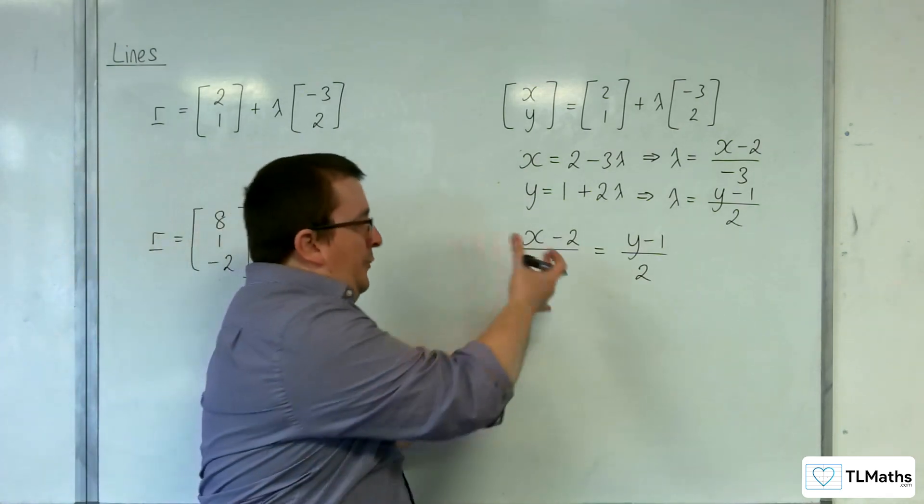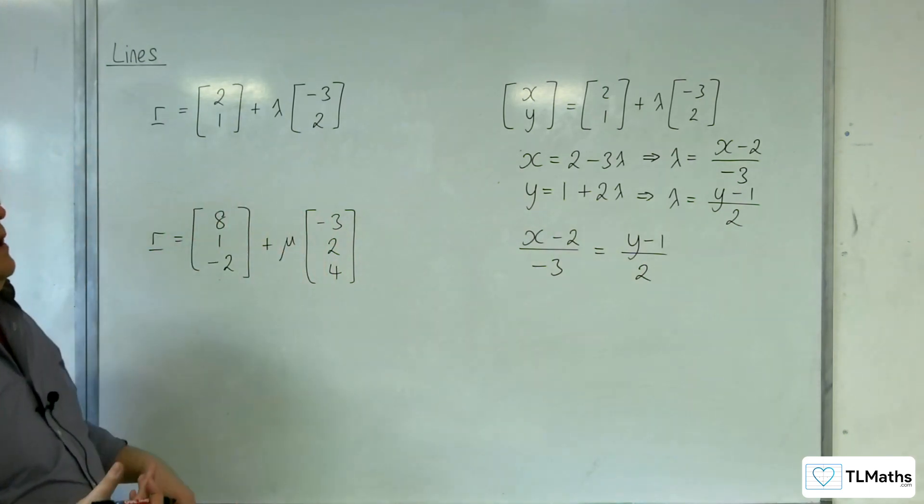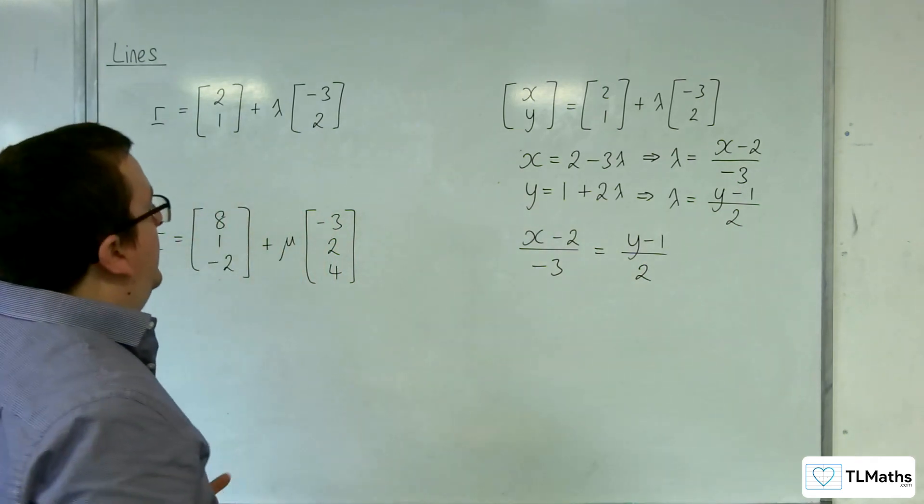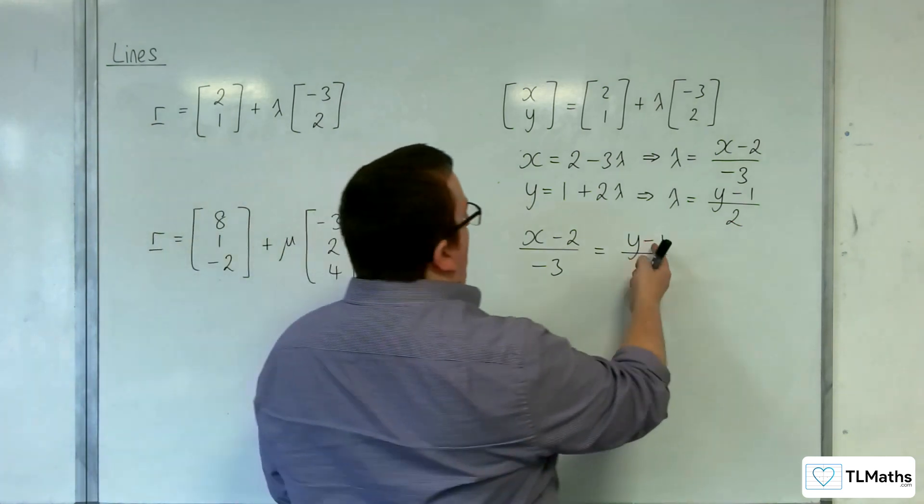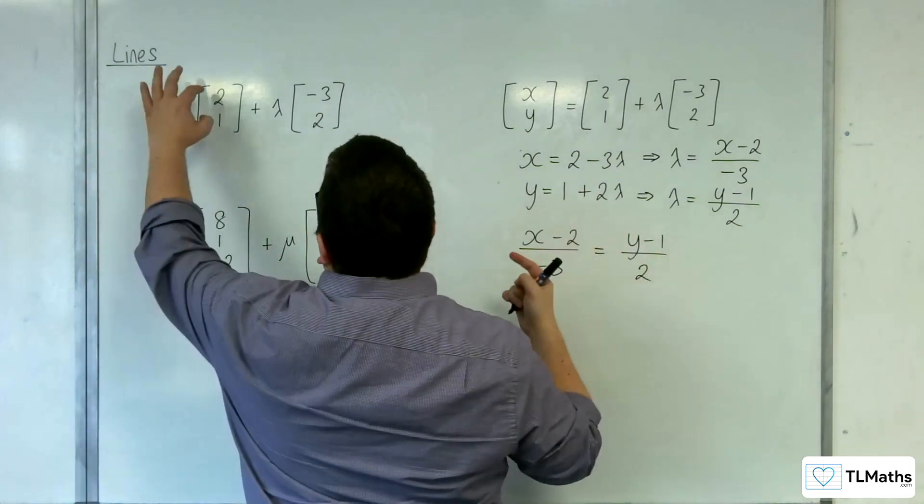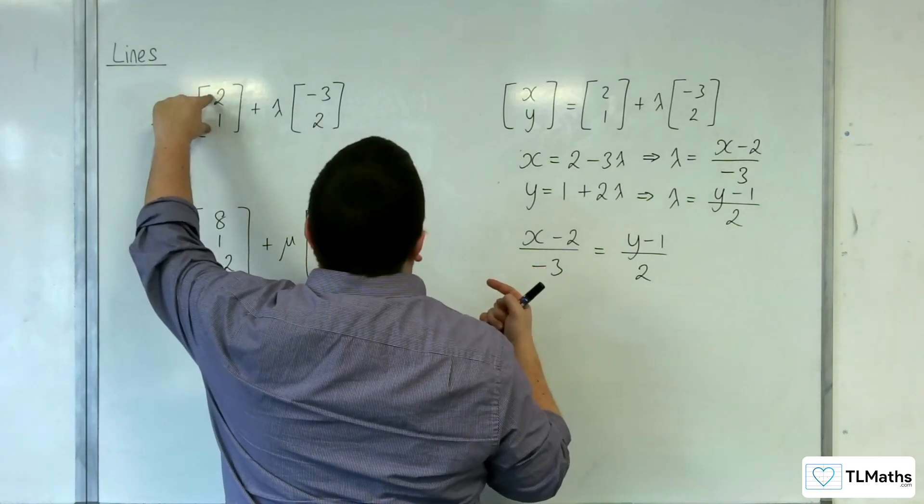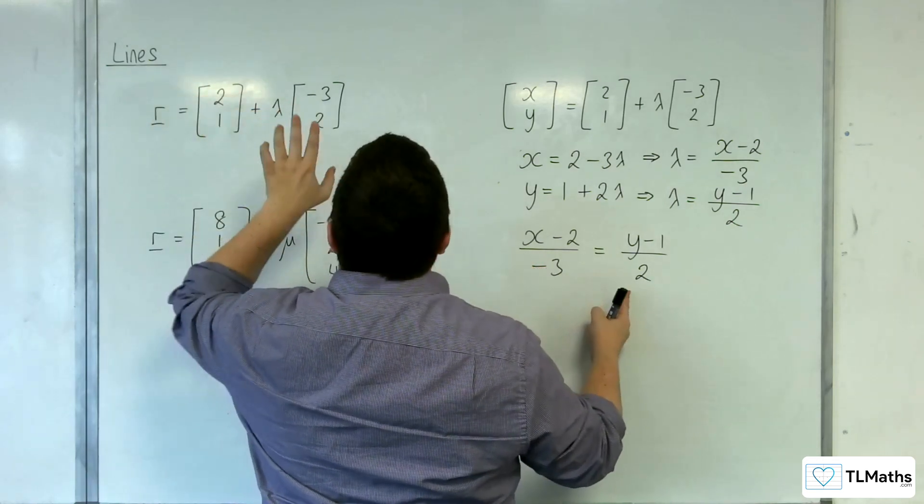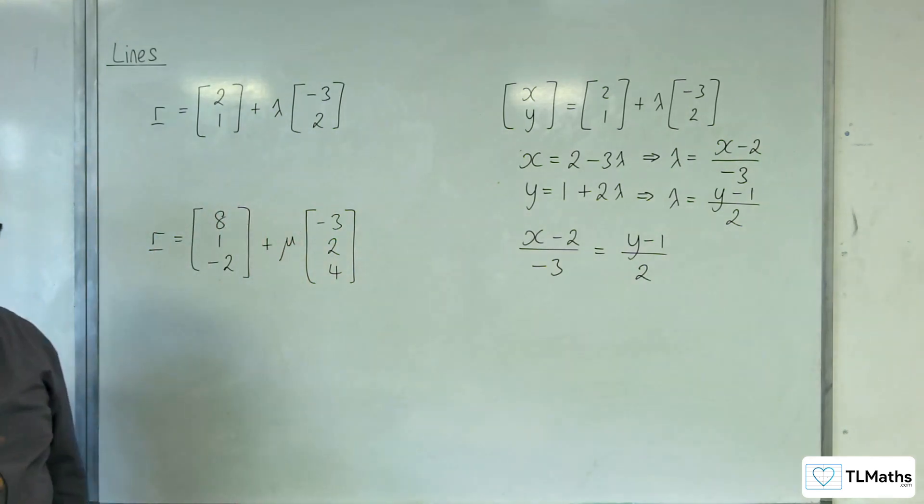Now, we're not used to using it in this form, of course. But you can kind of see where things are linking in, where the 1 and the 2, well, let's say 2 and the 1, rather, are relating directly to the position vector. And the minus 3, 2 are relating directly to the direction vector.